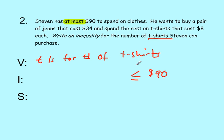Now we have to build our left side, the expression side. It says he wants to buy a pair of jeans that cost $34 and spend the rest on t-shirts that cost $8. So this inequality is going to be $34 for Steven's jeans plus $8 for each t-shirt that he purchased. So it's $8T.